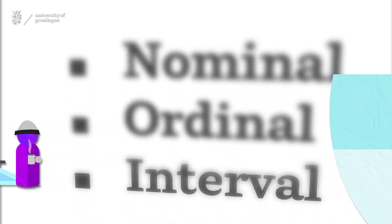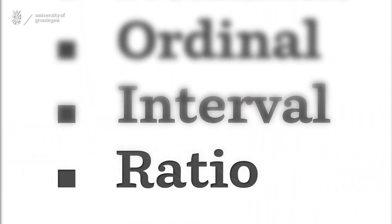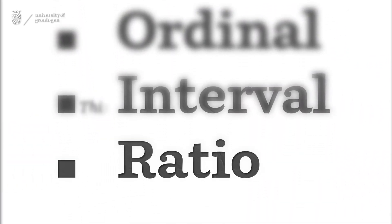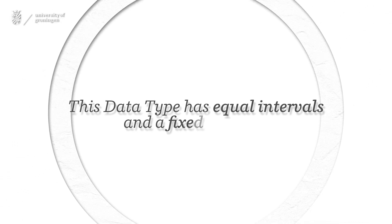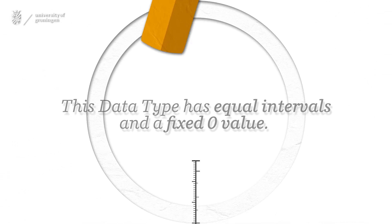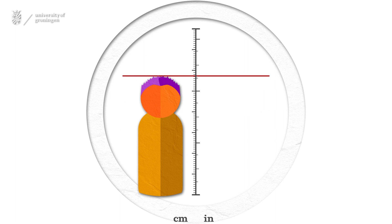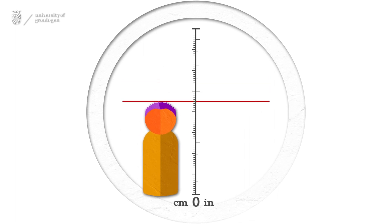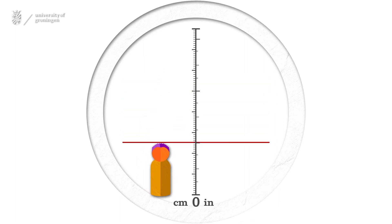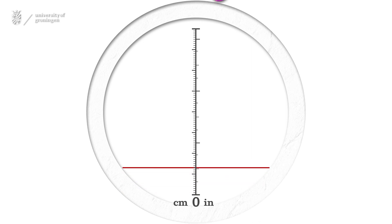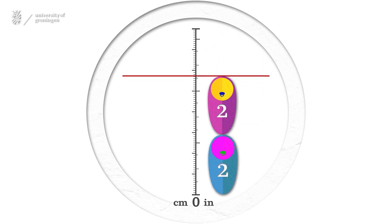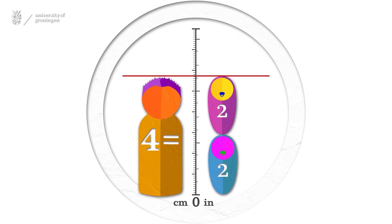Which leads us to the final data type: ratio. This data type has equal intervals and a fixed zero value. For example, measuring length in centimeters or inches. Zero always means that you do not have any length at all. Now we can make more advanced calculations — for example, two babies are the length of one boy.